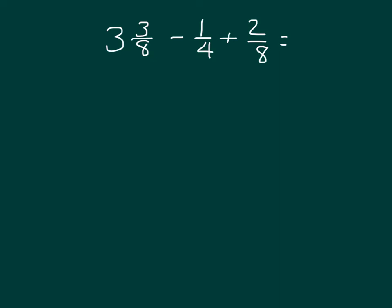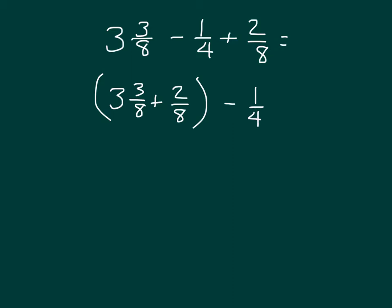Here we have another problem. We're talking about 8ths and also 4ths, and in this case we're actually subtracting and adding. The first thing we will do is group like units, concentrating on the fractional part. We have 8ths — 2 of these terms are 8ths — so we will group them, remembering to keep the operation the same. Since we're adding 2 eighths, we keep that plus sign. Combining those within parentheses, the one not included yet is the subtraction of 1 fourth, which we write in as well. 3 and 3 eighths plus 2 eighths gives us 3 and 5 eighths, minus 1 fourth.